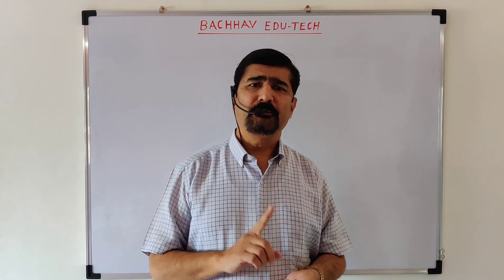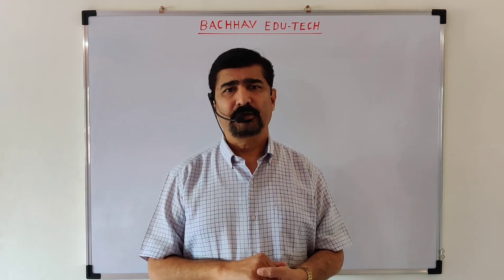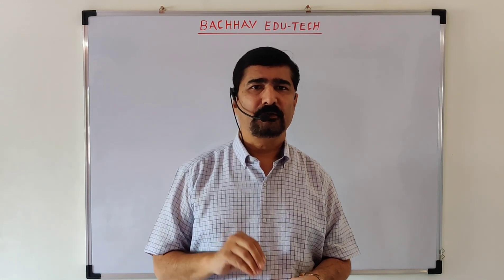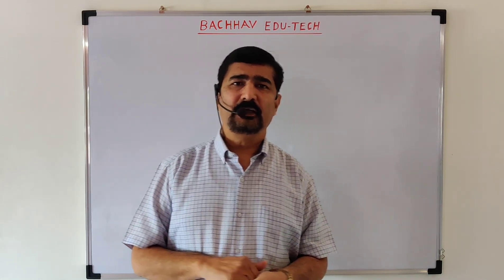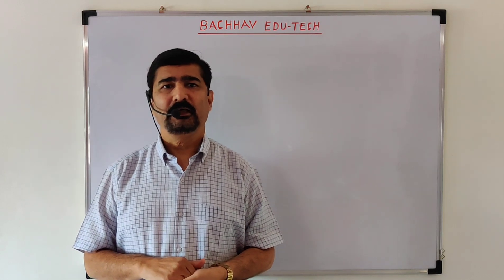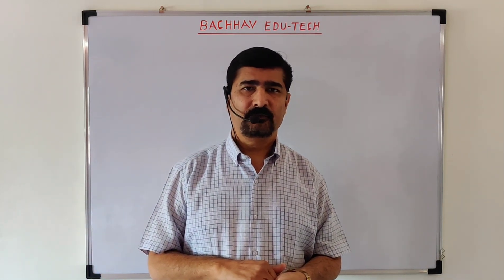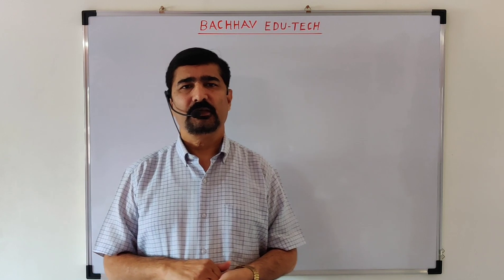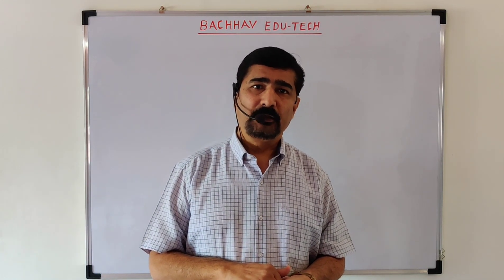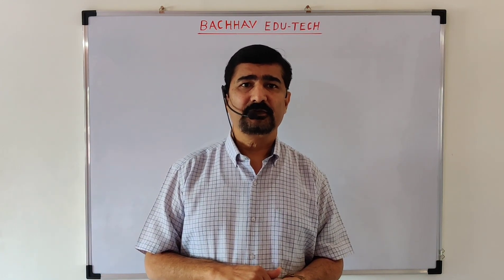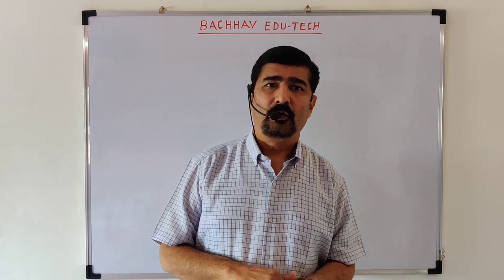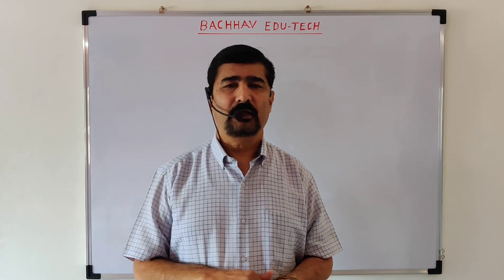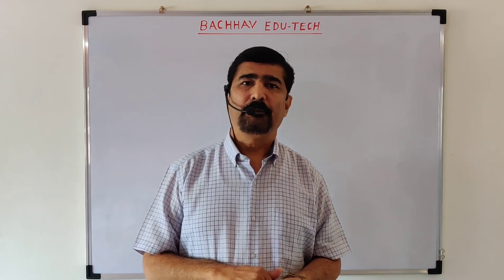The board paper will be of 40 marks for Maths 1 and 40 marks for Maths 2. And 20 marks will be credited as internal marks. There are 6 chapters in Maths 1. Before entering the subject, let us know the weightage of each chapter in the board exam and the paper pattern.